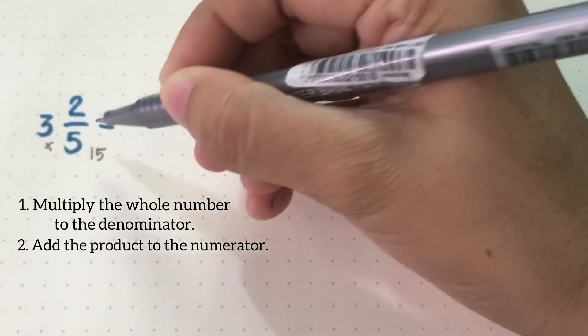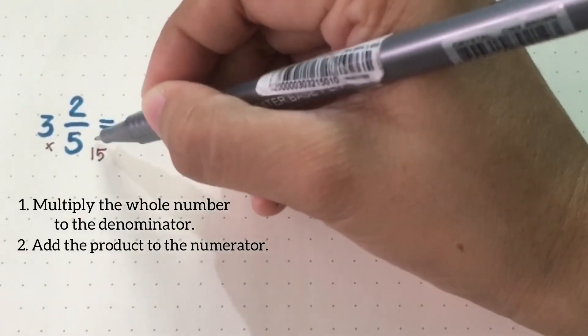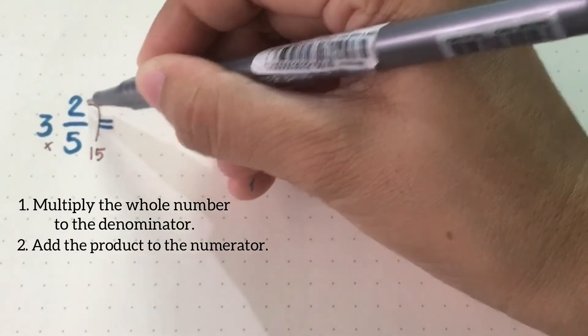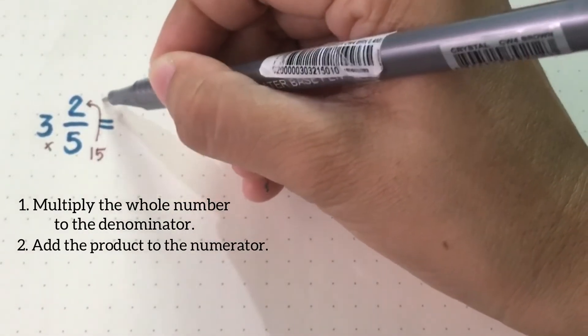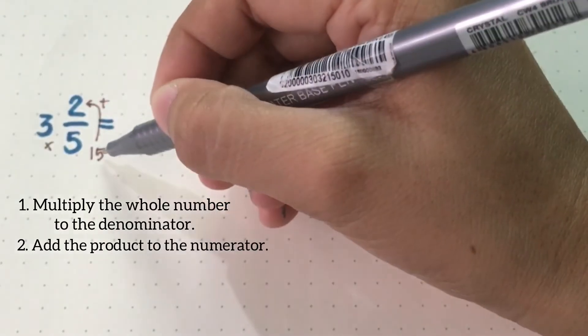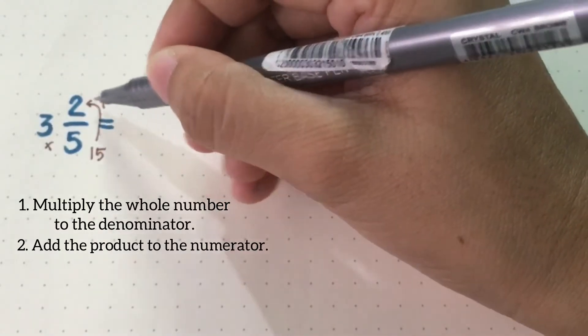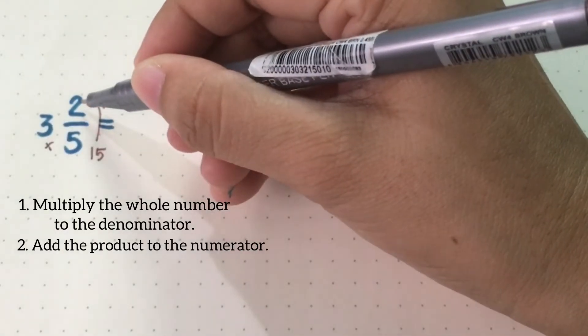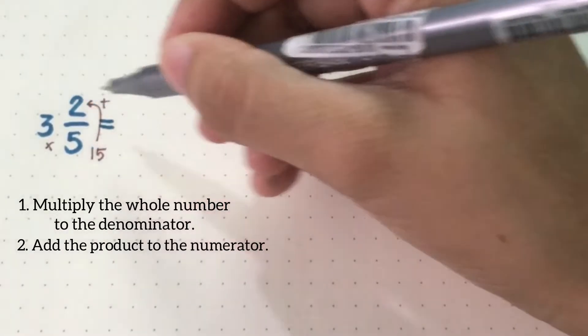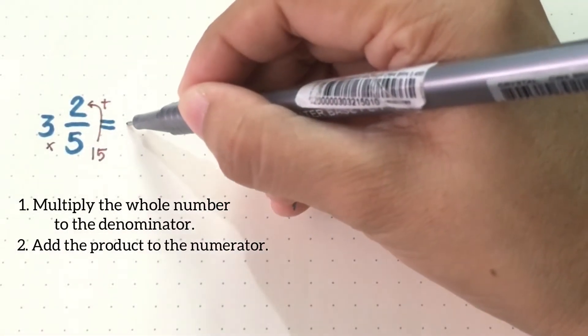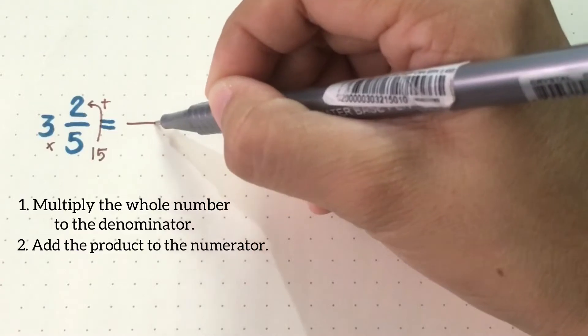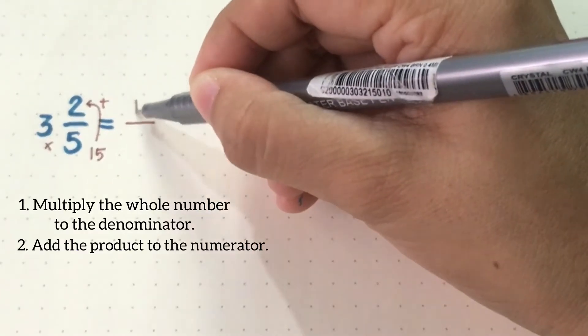Second step, add it to the numerator. 15 plus 2, that will be 17, and 17 will be the numerator of our answer.